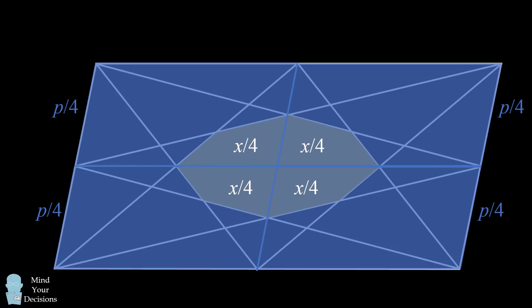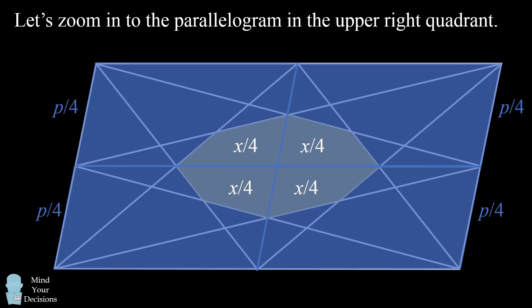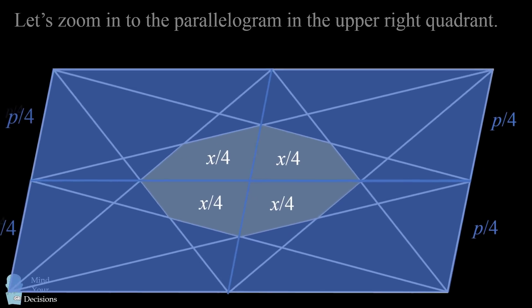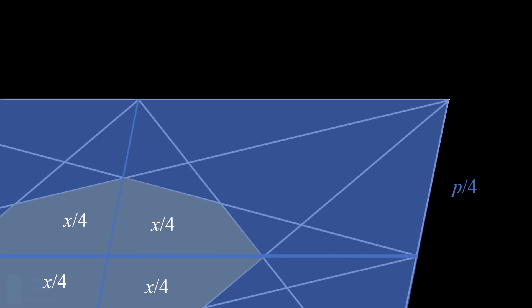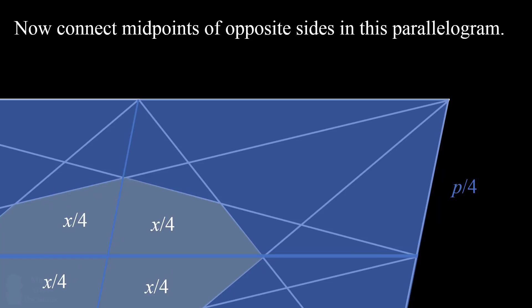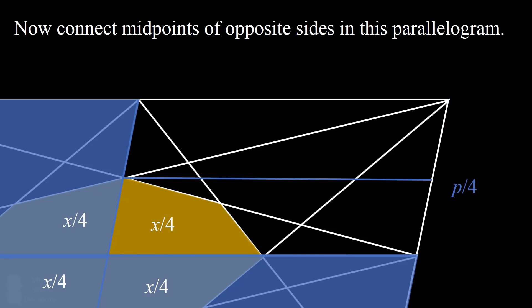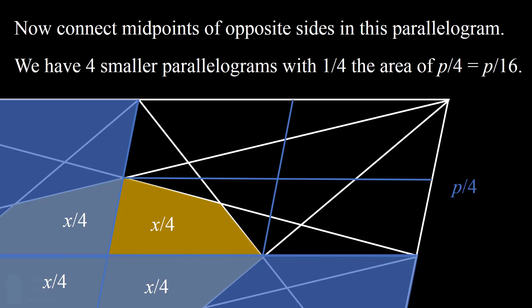We'll take one of these smaller parallelograms and do the same thing. Let's zoom into the parallelogram in the upper right quadrant. We connect the midpoints of opposite sides in this parallelogram to divide it into four smaller parallelograms. Each of these four smaller parallelograms will have one quarter the area of the previous small parallelogram, so one fourth of p over 4 will be p over 16.